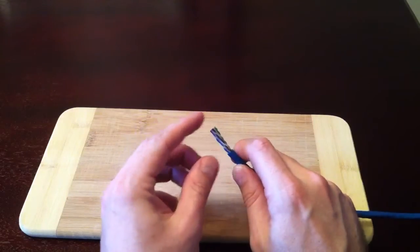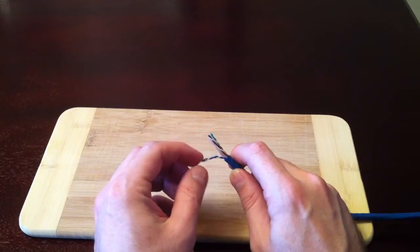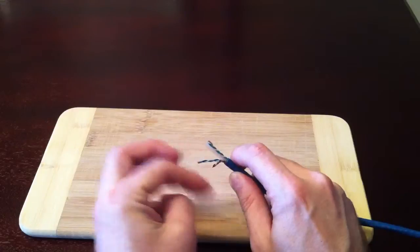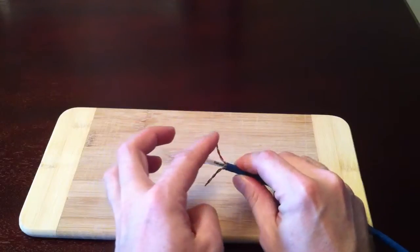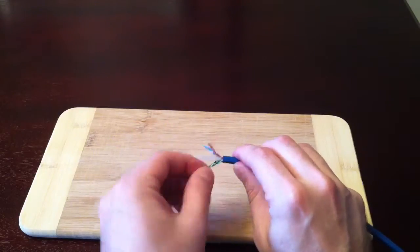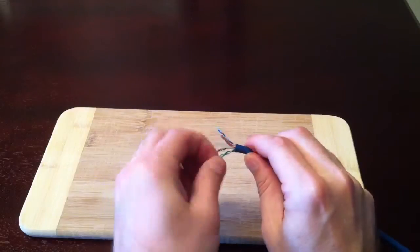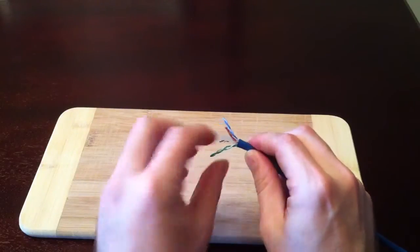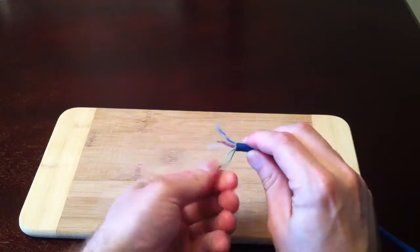You'll want to remove those four twisted wire pairs away from the plastic separator. After that, you'll want to splay each of the four twisted wire pairs onto eight individual wires.